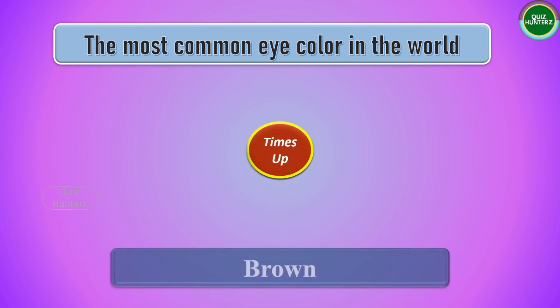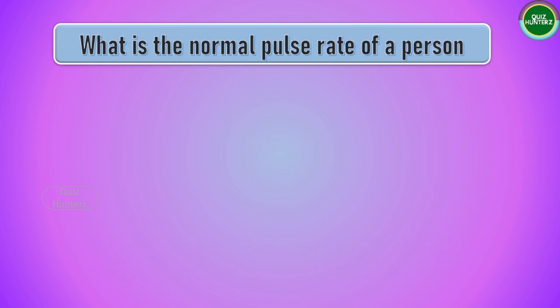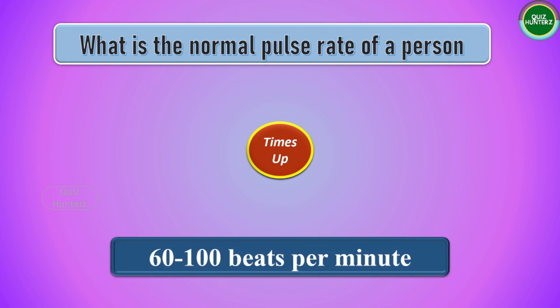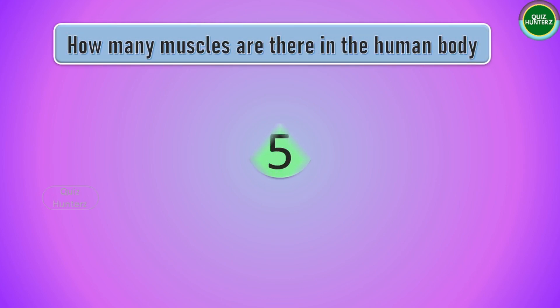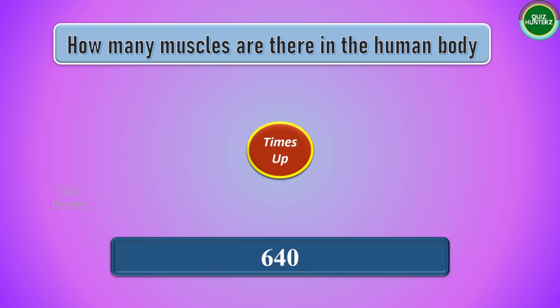The answer is brown. Next question: what is the normal pulse rate of a person? The answer is 60 to 100 beats per minute. Next question: how many muscles are there in the human body? The answer is 640 muscles.